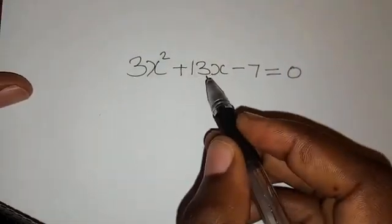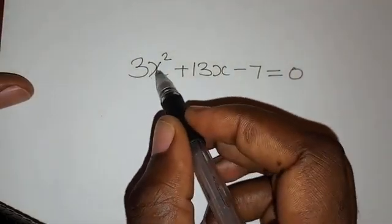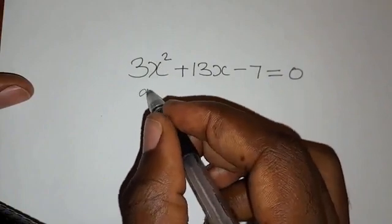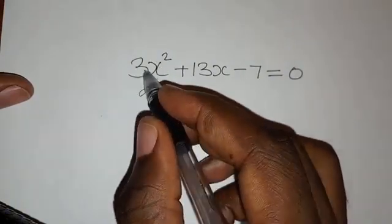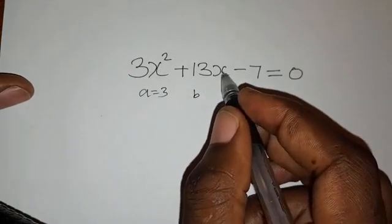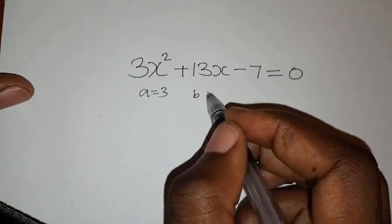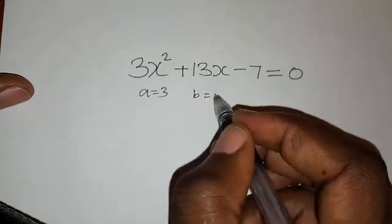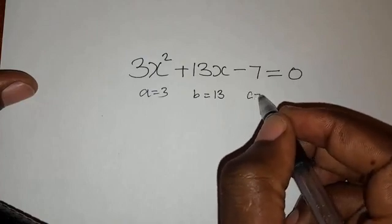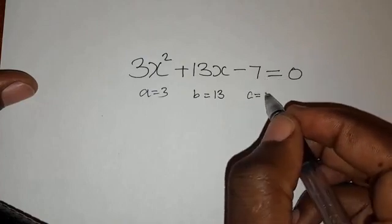So first of all, you need to know that the coefficient of x squared is a. So a is 3. Then the coefficient of x is b. So b in this case is 13. Then the constant is c, and in this case is negative 7.